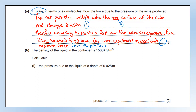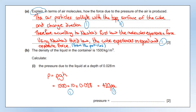The density of the liquid in the container is 1500 kg/m³. Calculate the pressure due to the liquid at a depth of 0.028 m. The equation we need is P = ρgh. We've got our density, our depth, and g = 10 on Earth — giving us 420 pascals. There's a mark for doing the correct working (equation showing numbers) and another for the correct answer with the correct unit.